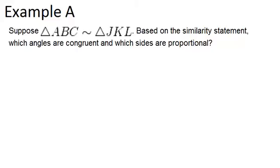In this video, we will look at a few examples that will allow us to practice working with similar polygons. In example A, suppose triangle ABC is similar to triangle JKL. Based on the similarity statement, which angles are congruent and which sides are proportional?